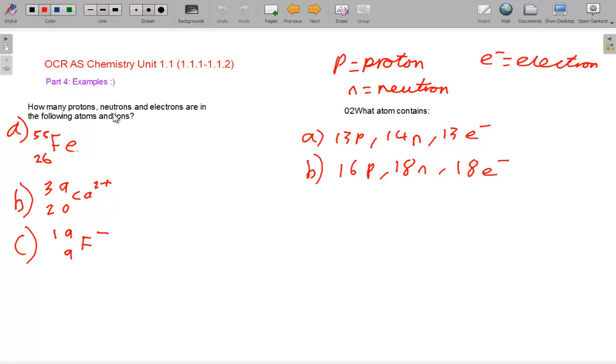Okay, hopefully you tried those questions. We will go through them now. So for iron, we have a molecular mass of 55. So to find the number of neutrons, you would take 26 away from 55. That if you read the key very carefully, you will have 26 protons.